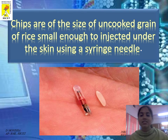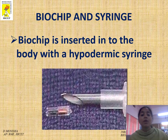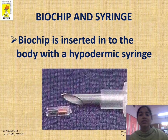Here you can see the biochip size. It looks like an uncooked grain of rice. It is small enough to inject under the skin using a syringe needle. The biochip is inserted into the body with a hypodermal syringe.